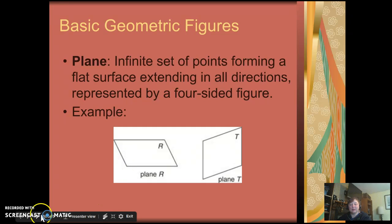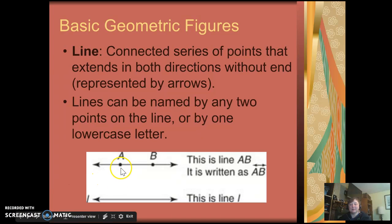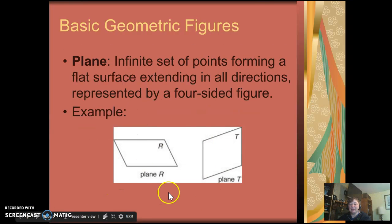So our example here, if we look back at our lines, A and B would be collinear because they are on the same line. To label a plane, you have to use three non-collinear points. So three points that aren't on the same line can be used to describe or label a plane.